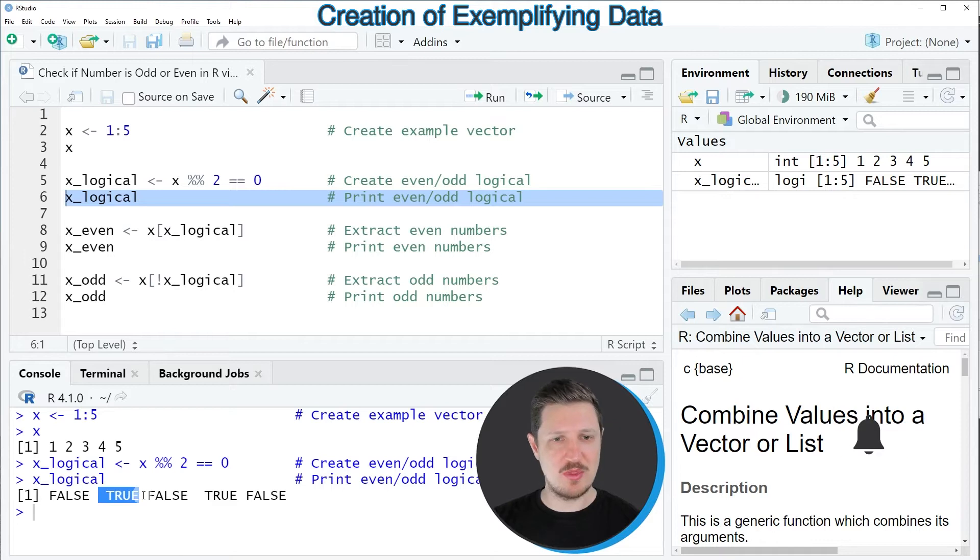Whenever this value is TRUE, the corresponding value in our input vector is even. So in this case, the numbers 2 and 4 are even, as you can see based on the logical indicators in our new vector object.